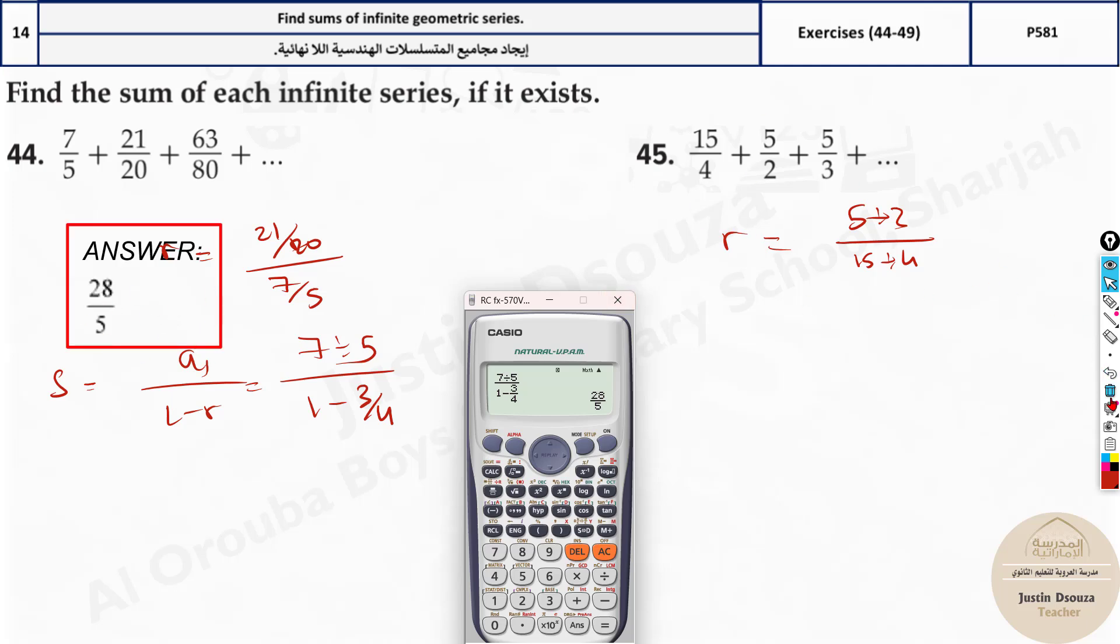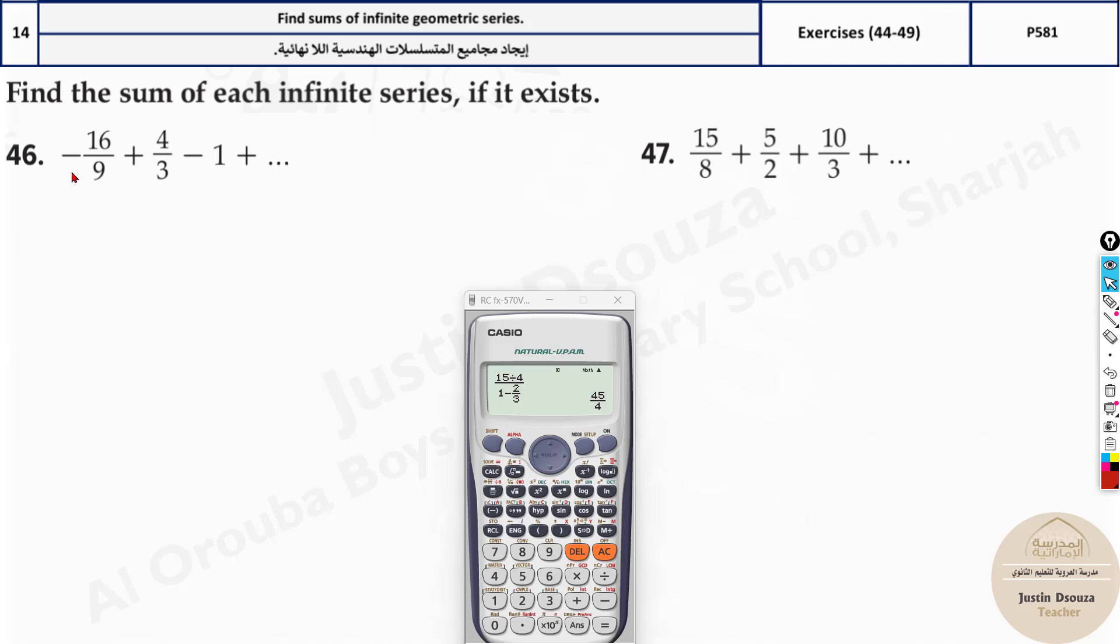Same thing over here. You can do it by yourselves now. Let's quickly do this. 5 divided by 2, that's 2.5 divided by 15 divided by 4. It's 2 thirds. Now all you need to do is 15 divided by 4, 1 minus 2 thirds. When you're writing 1 minus, write it like this itself. So answer is 45 by 4. Similarly, please do try these.